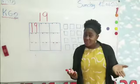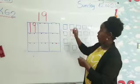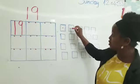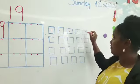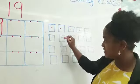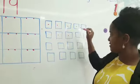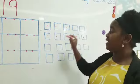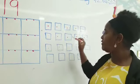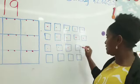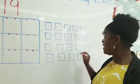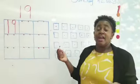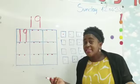Let's count together. 1, 2, 3, 4, 5, 6, 7, 8, 9, 10, 11, 12, 13, 14, 15, 16, 17, 18, 19. How do we write number 19?